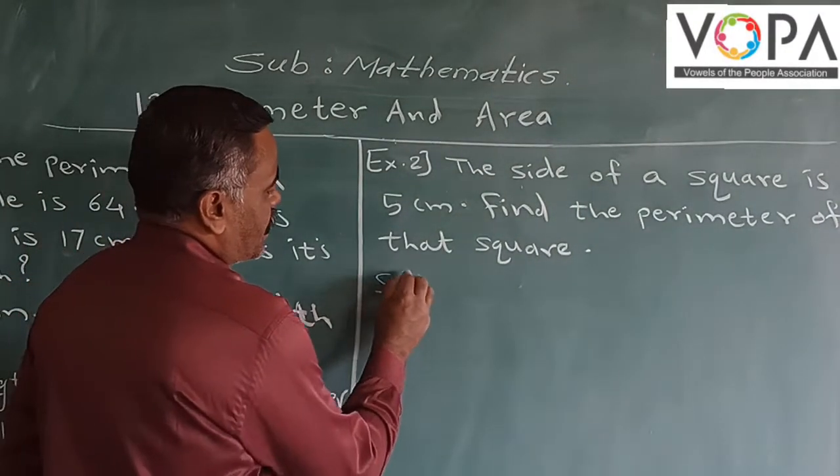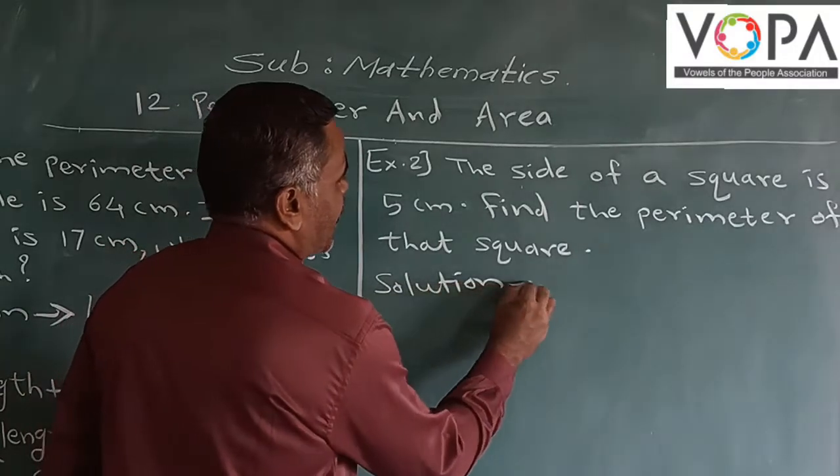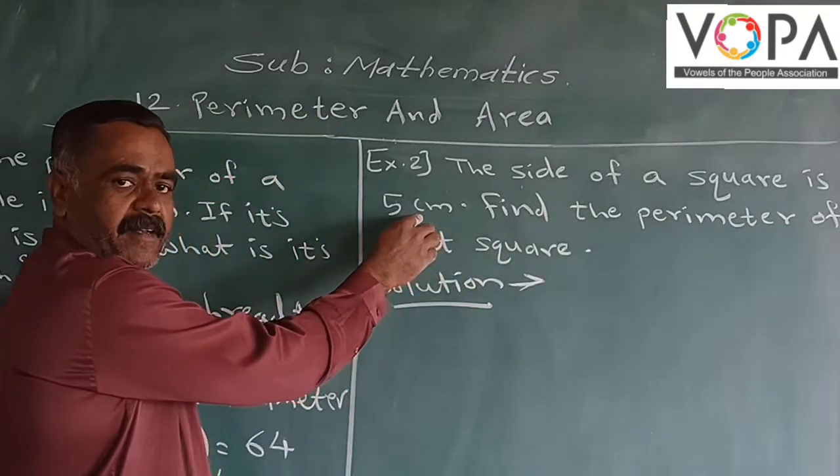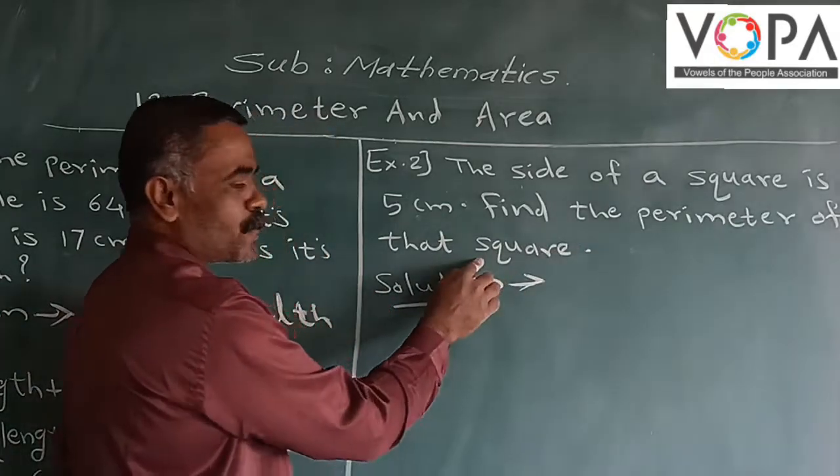See the second example, the side of a square is 5 cm. Find the perimeter of that square.